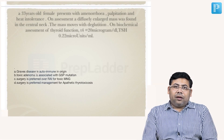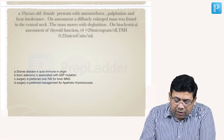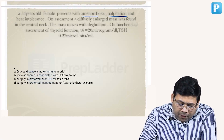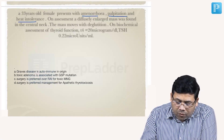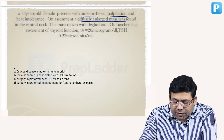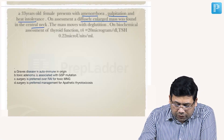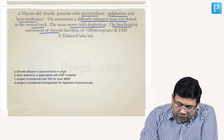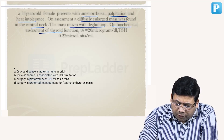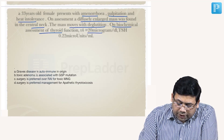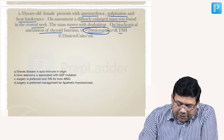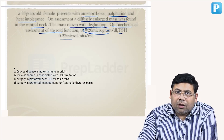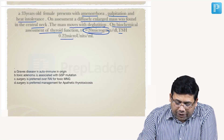A 33-year-old female presents with amenorrhea, palpitations, and heat intolerance. On assessment, a diffusely enlarged mass was found in the central part of the neck. The mass moves with deglutition. Biochemical assessment of thyroid functions revealed T4 of 20 micrograms and TSH of 0.22 micrograms. This is a case of hyperthyroidism, likely due to Graves' disease.